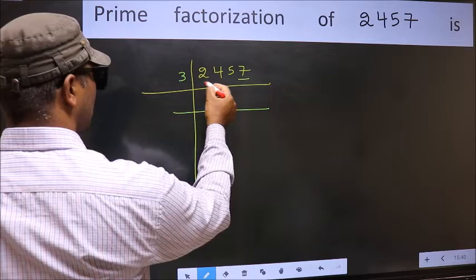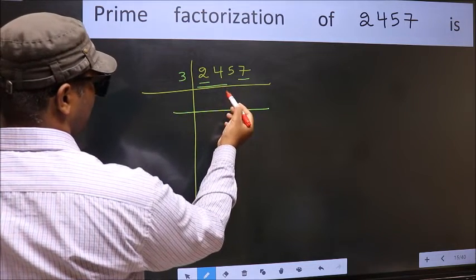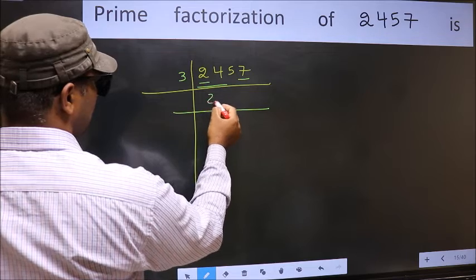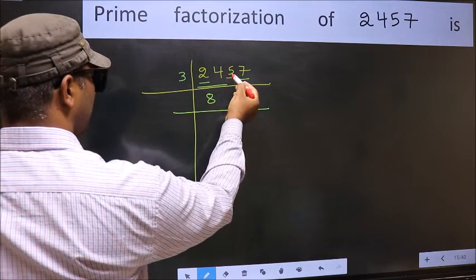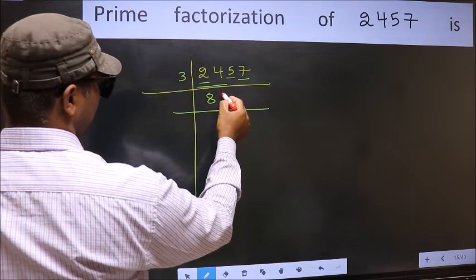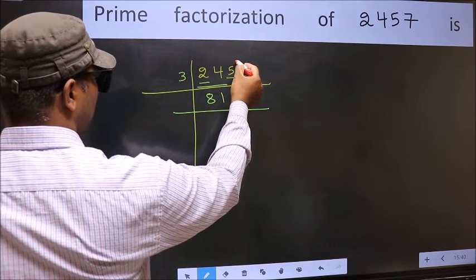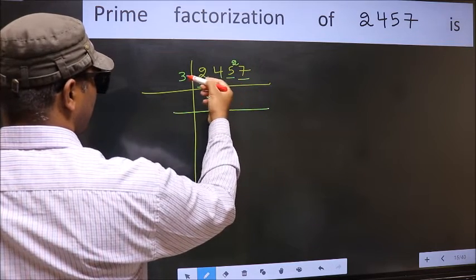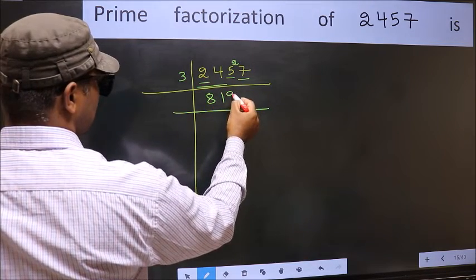First number 2 is smaller than 3, so take 2 numbers: 24. When do we get 24 in the 3 table? 3 times 8 is 24. The other number is 5. A number close to 5 in the 3 table is 3; 5 minus 3 is 2, carry forward 2. 27 — when do we get 27 in the 3 table? 3 times 9 is 27.